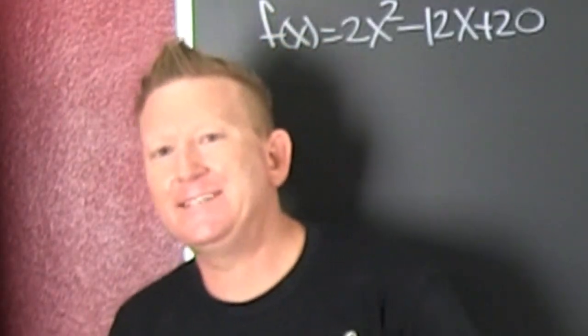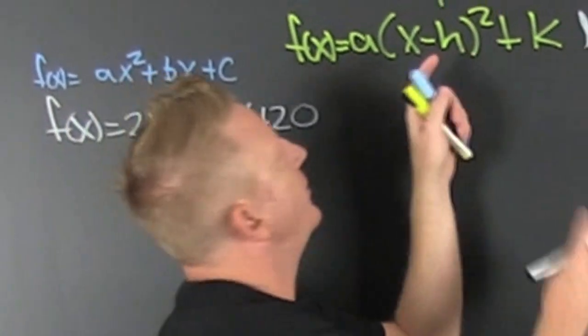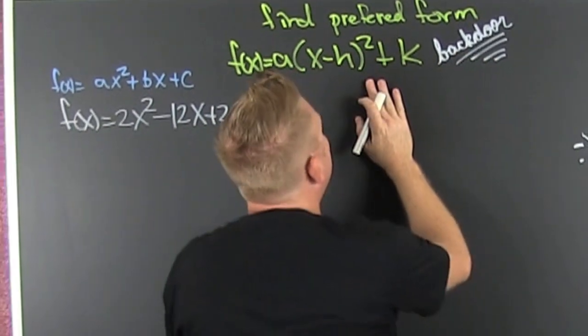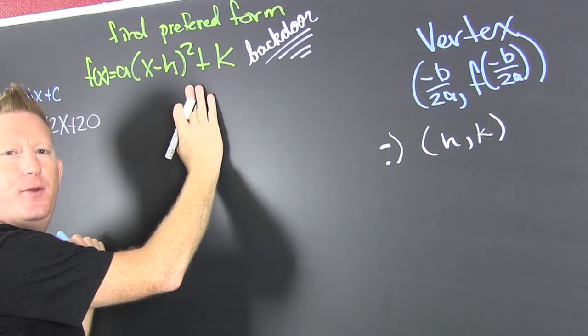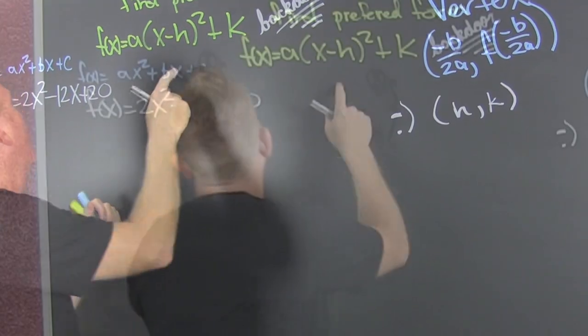We're trying to leave through the back door. What are we talking about? We're trying to change the form of the parabola. You know that one time when you wanted to take a shortcut? Well, here's your shortcut.